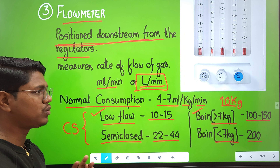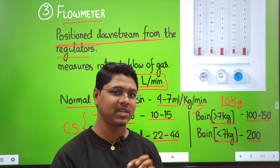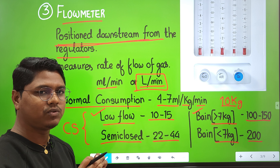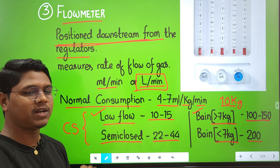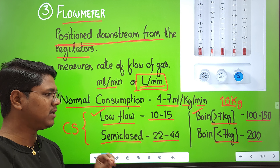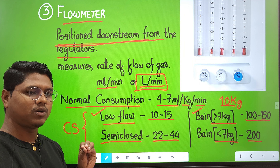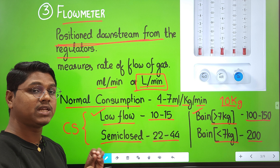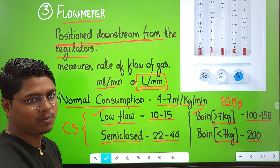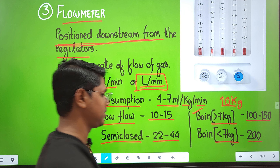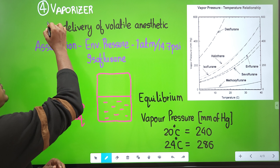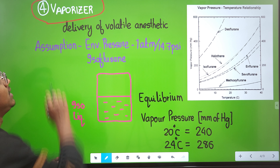In most veterinary patients — especially small animals — the flow rate is usually set fixed at 1 liter per minute. If you download the veterinary anesthesia cheat sheet from the internet, it is a very good reference for inhalant anesthesia practice in the OT and mentions this standard 1 L/min setting.